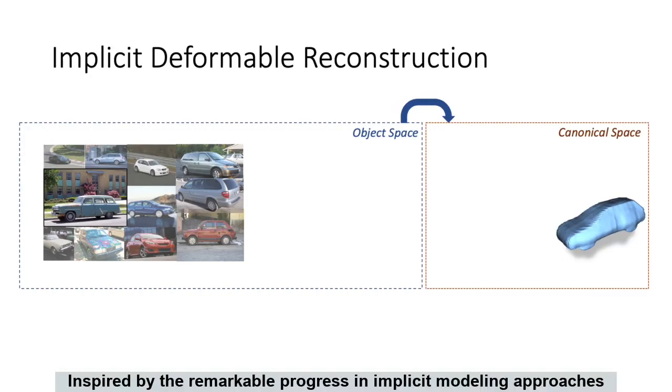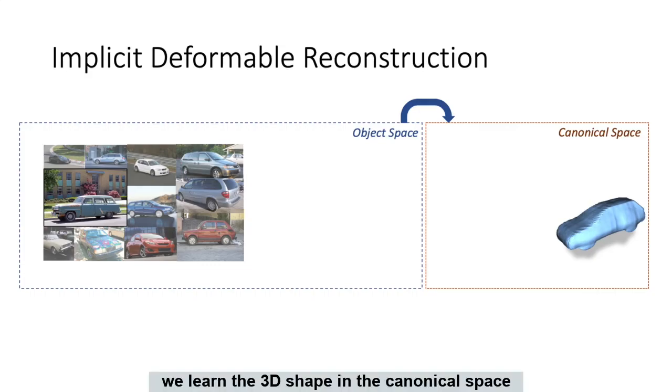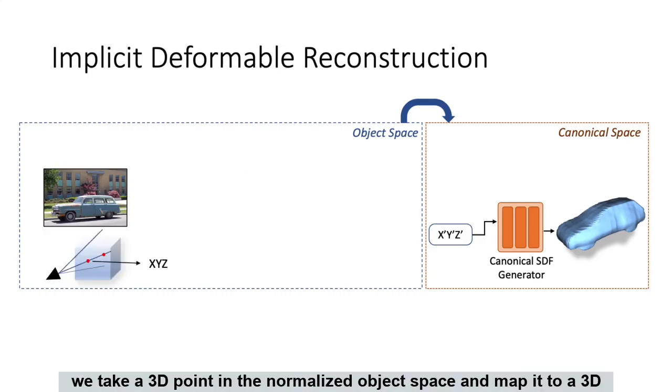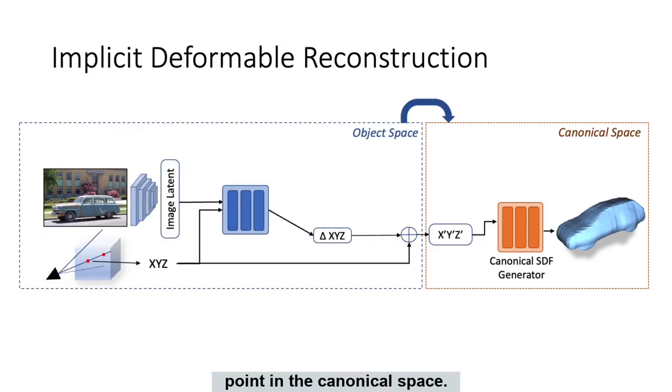Inspired by the remarkable progress in implicit modeling approaches, we learn the 3D shape in the canonical space in terms of an implicit signed-distance field. To learn the shape of each individual instance, we take a 3D point in the normalized object space and map it to a 3D point in the canonical space.